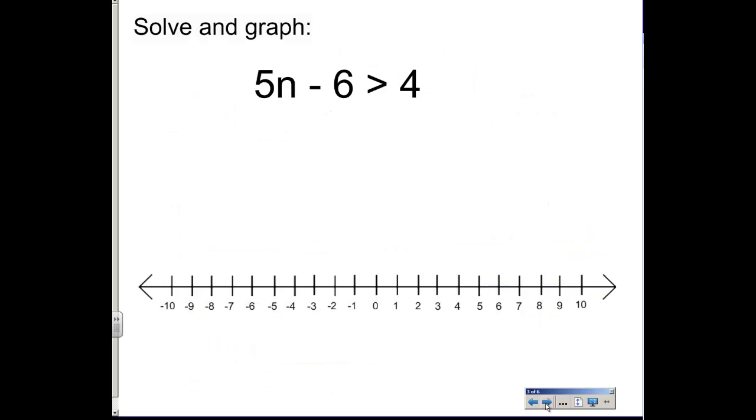For this example, we're going to solve and graph. We cannot graph until we first solve, so we're going to get rid of the 6 first. So we're going to add 6 to both sides, and that will give us a 0 here. Bring down the 5n is greater than 10.